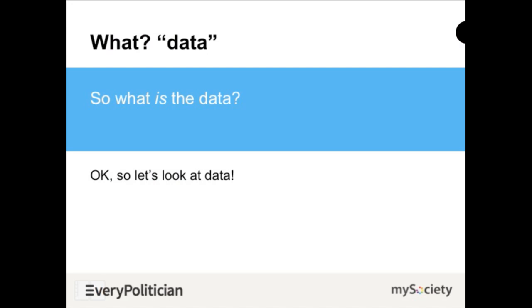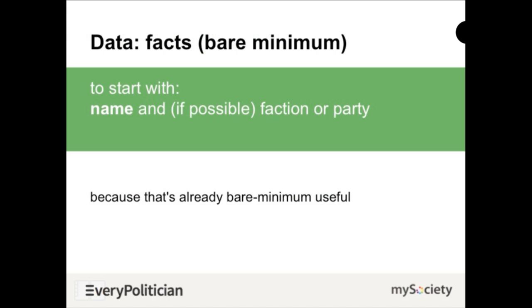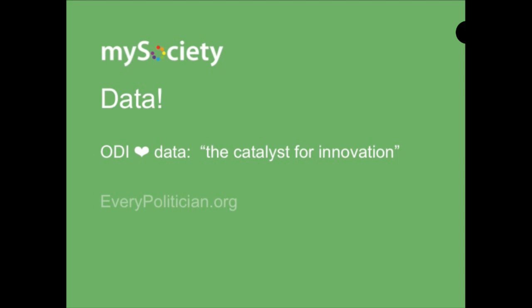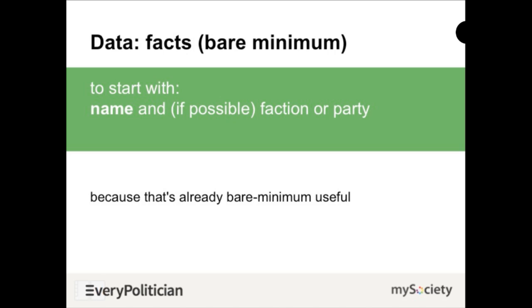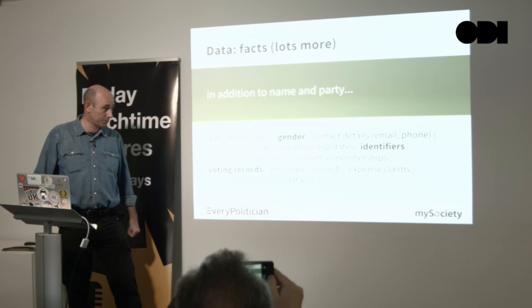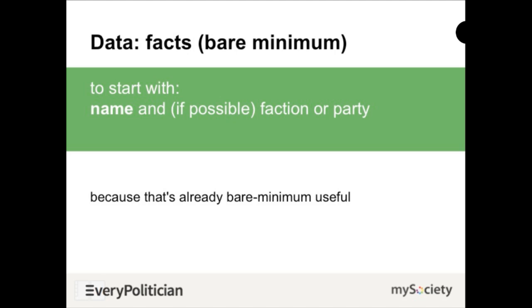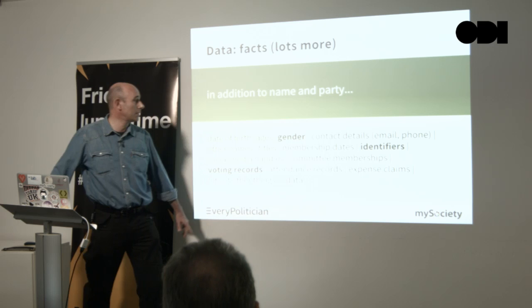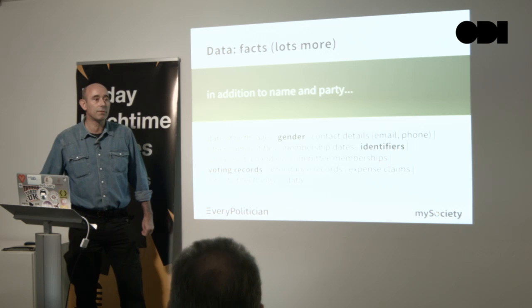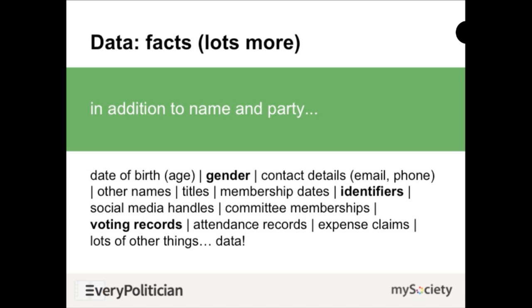Because we're in the Open Data Institute, you're most interested in what I mean by data — data is the catalyst for innovation, according to the ODI. To start with, for every politician, what we mean is the name and, if possible, the factional party of the politician. That alone, as core data, is already useful. There's also a lot more we do get: gender is an interesting one because we're running a crowdsourcing project, as that data is broadly missing from most data sets in the world. We also preserve identifiers from external sources so our data maps through to those sources, and voting records will make our data more useful.